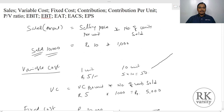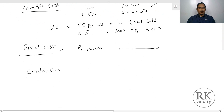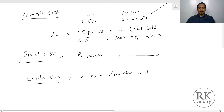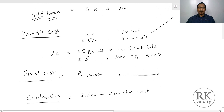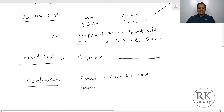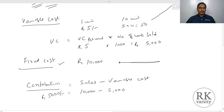Then you have contribution. Contribution is sales minus variable cost. In our example, we have sales of Rs.10,000 and variable cost of Rs.5,000, so contribution is Rs.5,000.